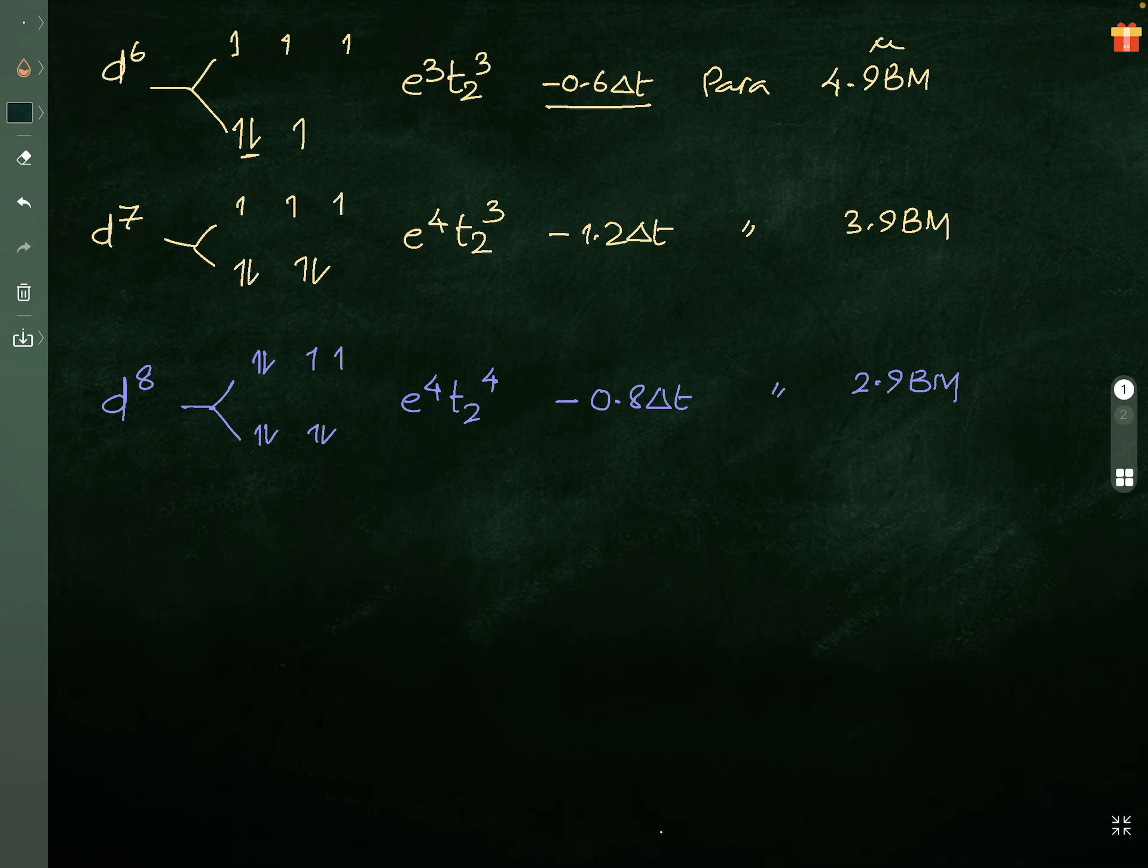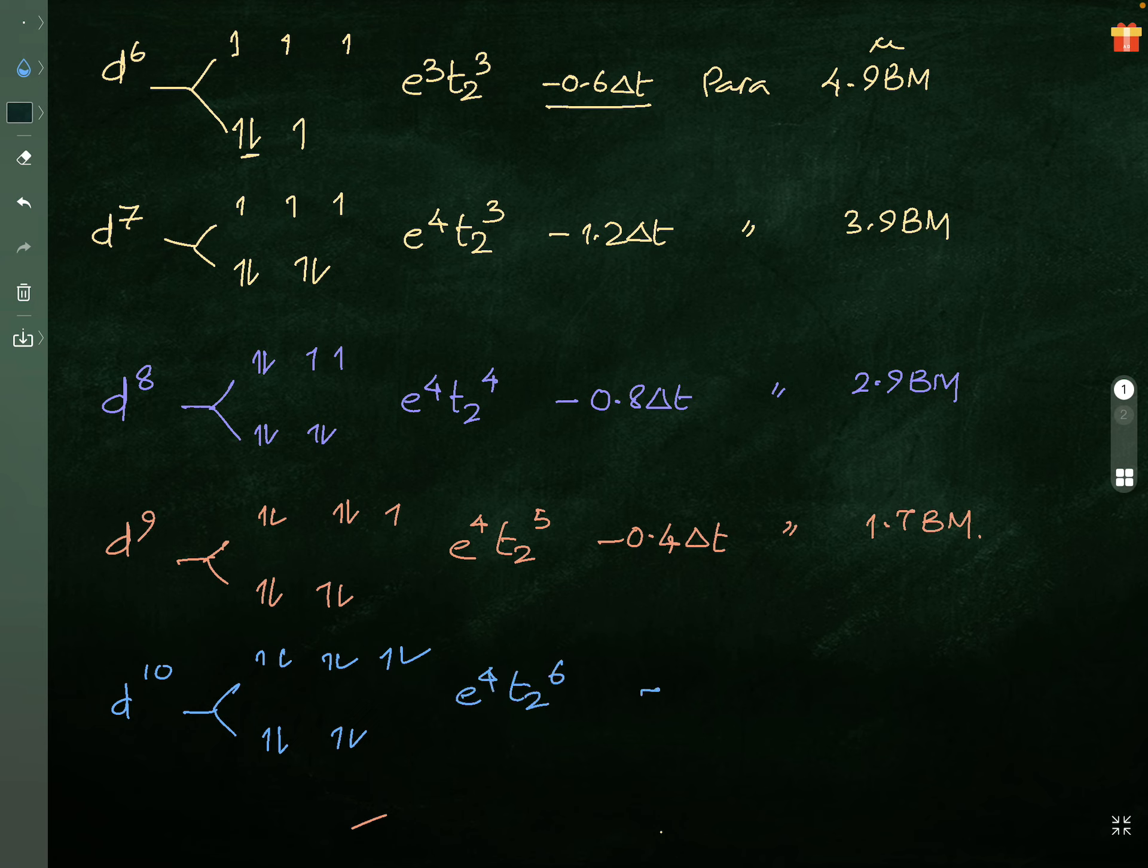d9 configuration: one, two, three, four, five, six, seven, eight, nine. This is the right way of writing: e4 t2^5, minus 0.4 delta t, still paramagnetic 1.73 Bohr magnetons. Last, interesting: one, two, three, four, five, six, seven, eight, nine, ten - e4 t2^6, zero, diamagnetic, all paired electrons.